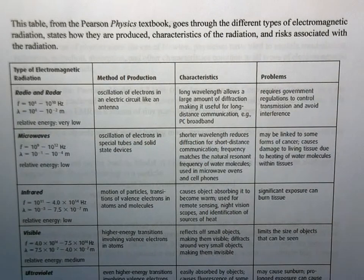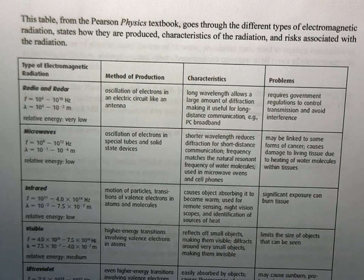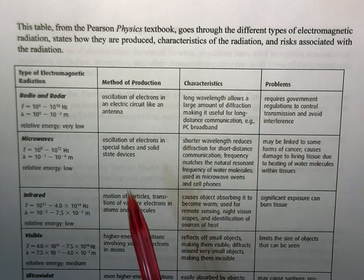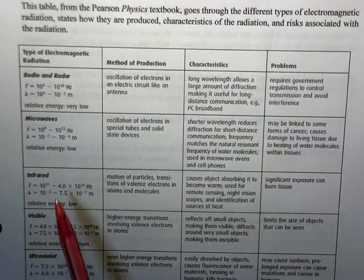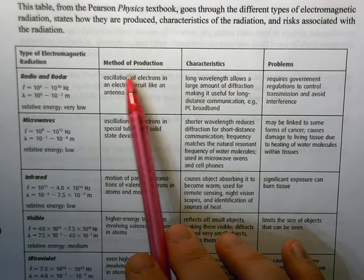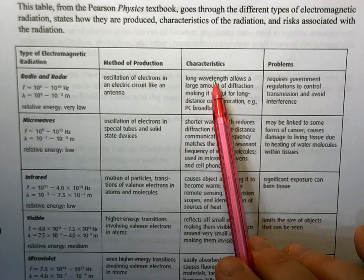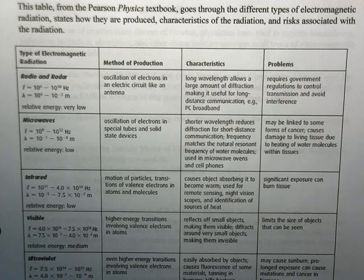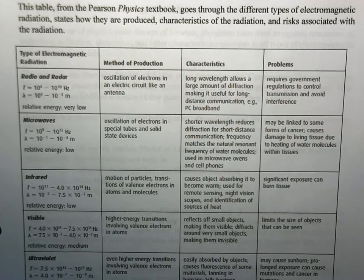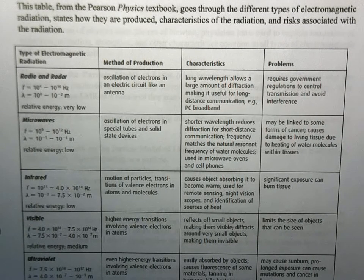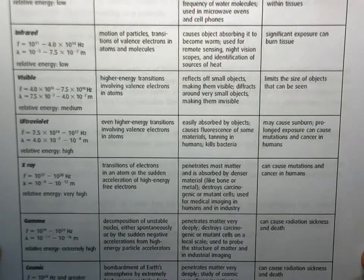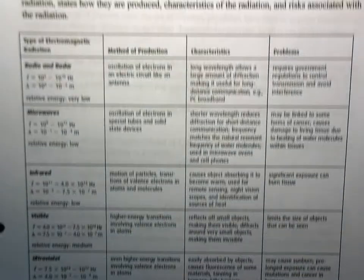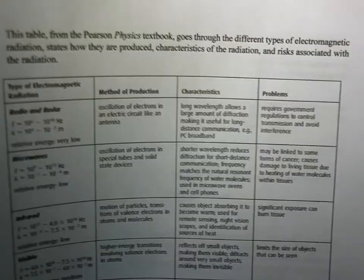In your notes, I also have a table that's taken from the Pearson physics textbook. This is the standard physics textbook for Physics 20 and 30. It just goes through different types of electromagnetic radiation. It talks about how they're commonly produced, some known characteristics we have of that radiation. And when we talk about problems, we're talking about like risk or potential issues. Like UV light causes sunburns and has been linked to melanoma. This is kind of the chart here. Do you have to memorize that? Absolutely not. This is just more for your information to kind of give you a nice, really complete overview of what's going on with electromagnetic radiation.